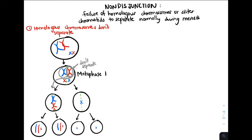Notice how the two gametes on the left have an extra number of chromosomes, whereas the two gametes on the right are missing chromosomes. Therefore, none of those gametes have the correct or normal number of chromosomes. This tells us that if non-disjunction occurs when homologous chromosomes don't separate in meiosis I, then no gametes have the correct number of chromosomes.